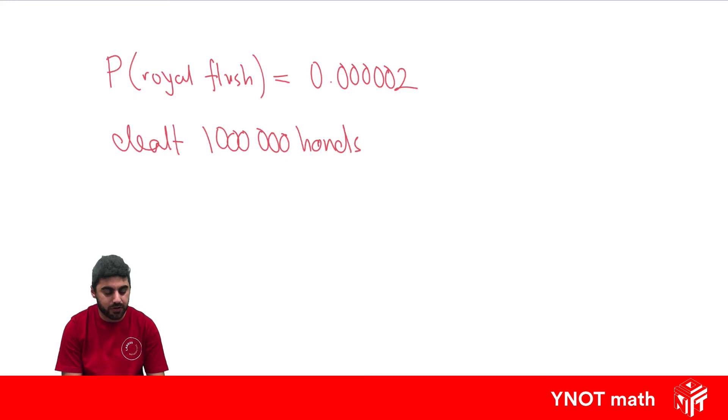So the expected frequency would be, how many royal flushes would you expect? Now using our formula,